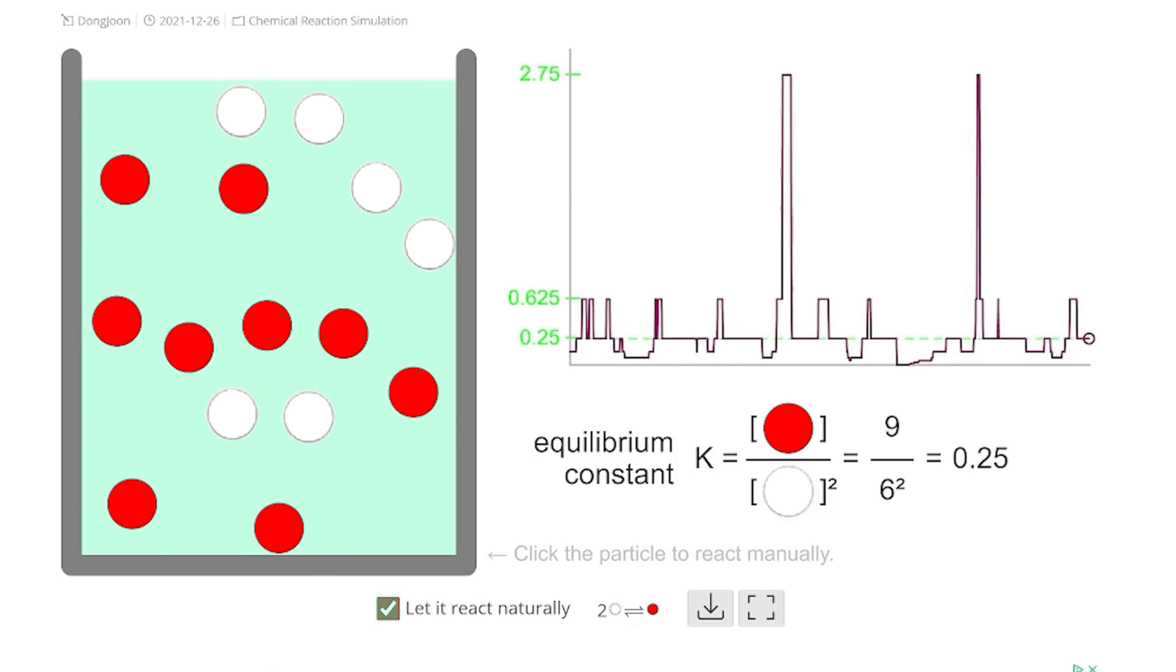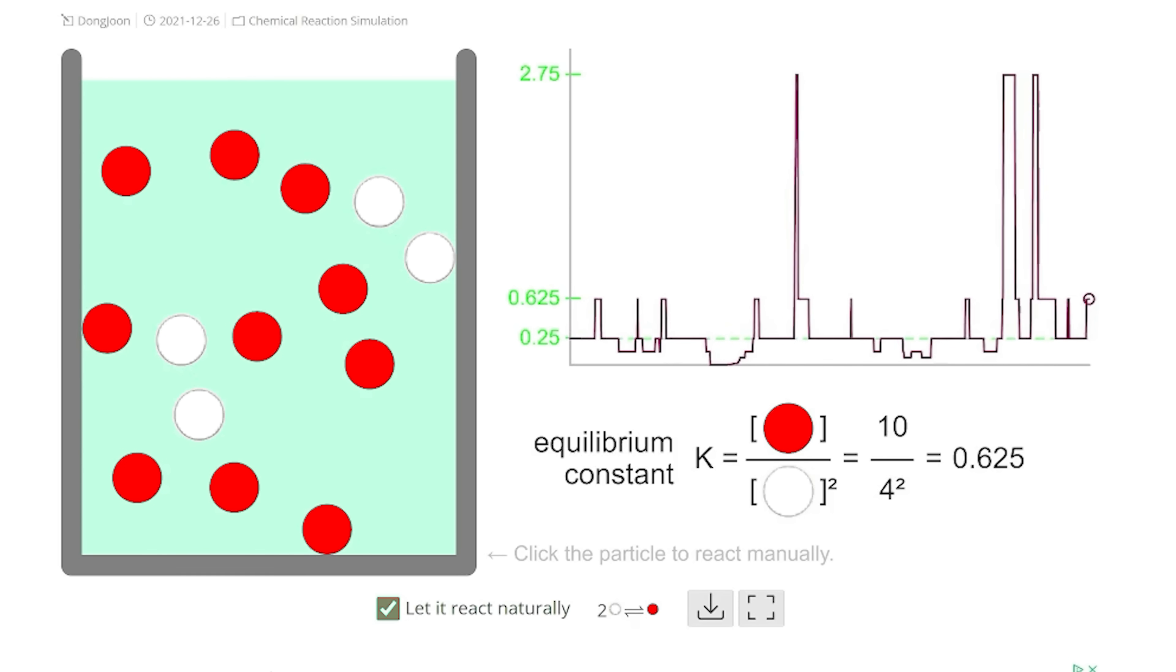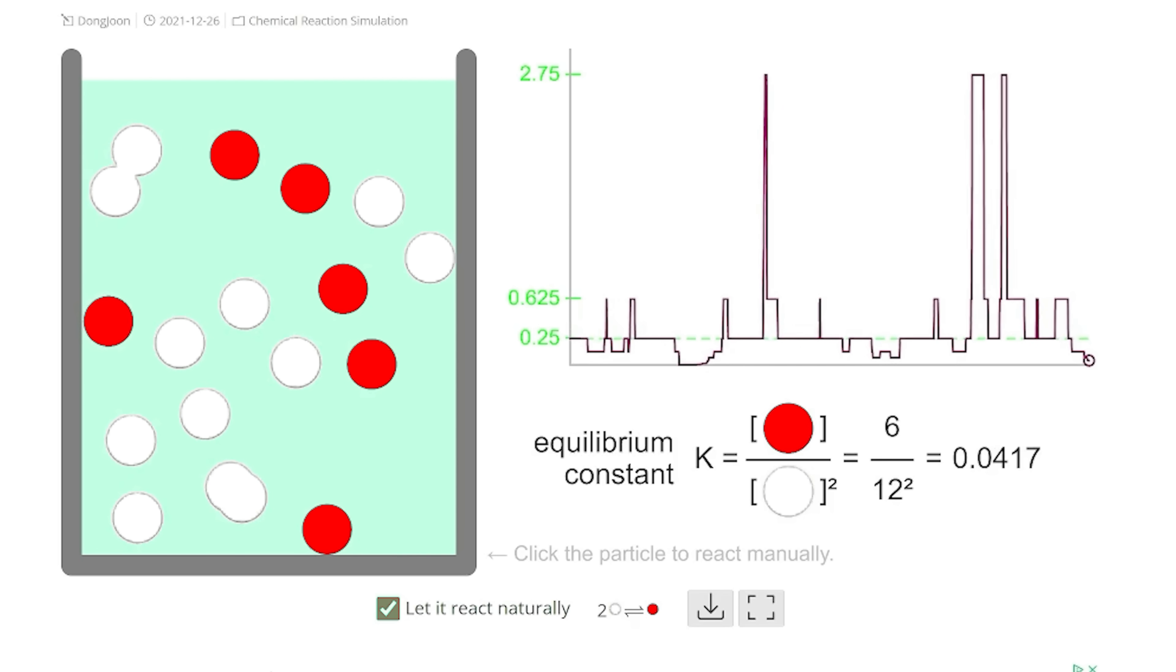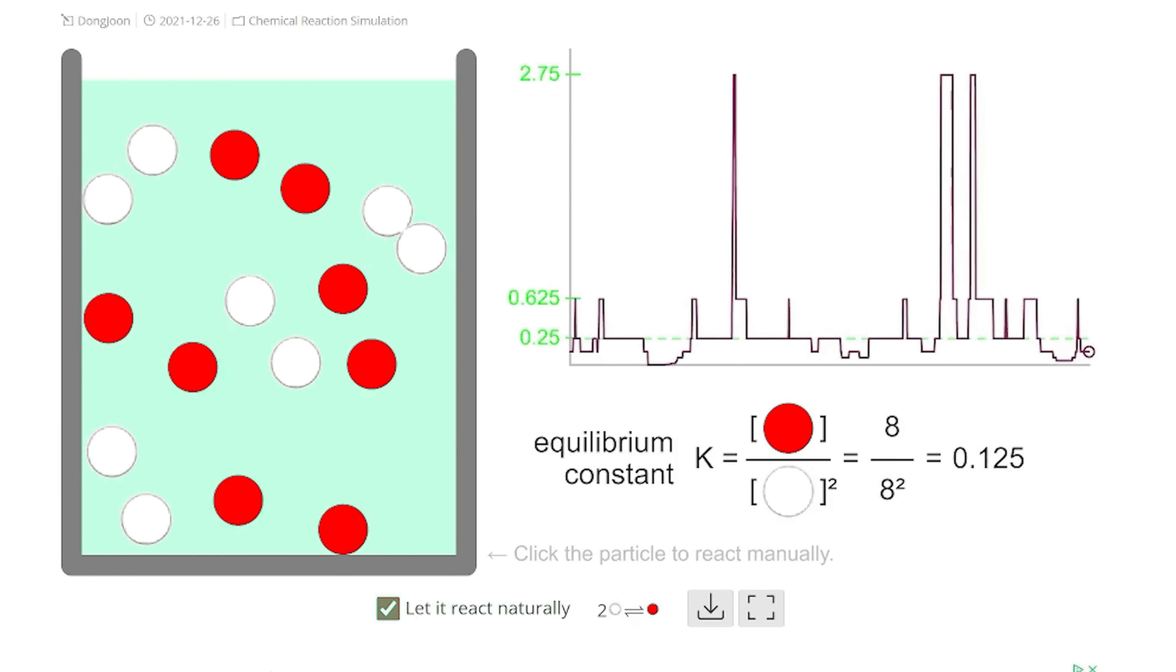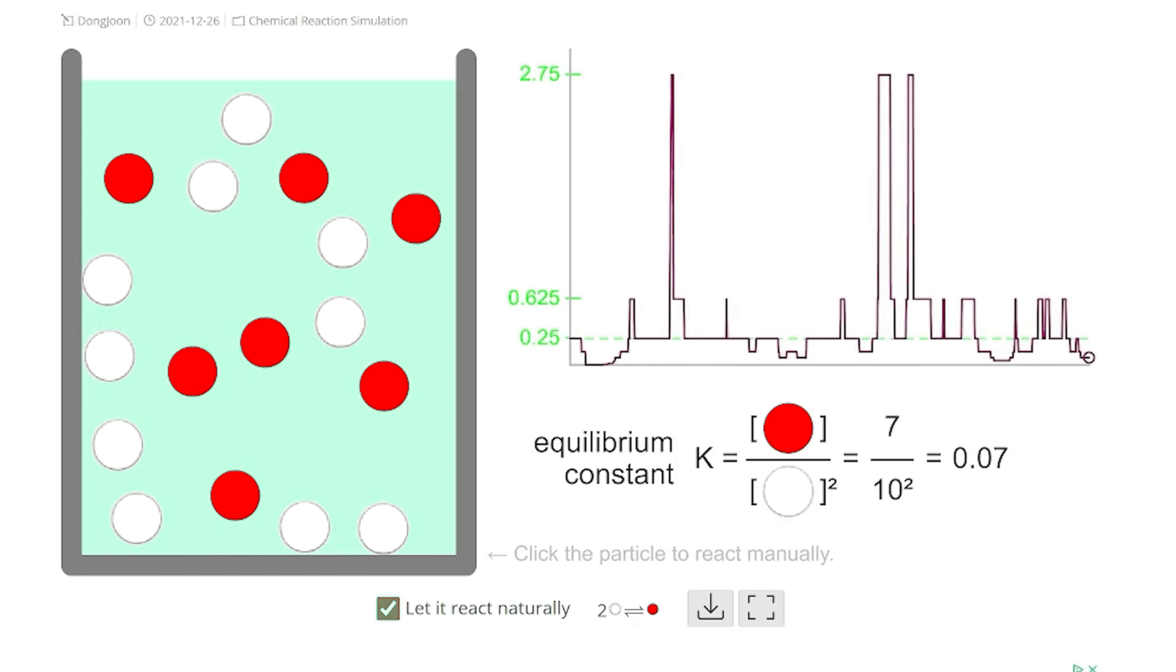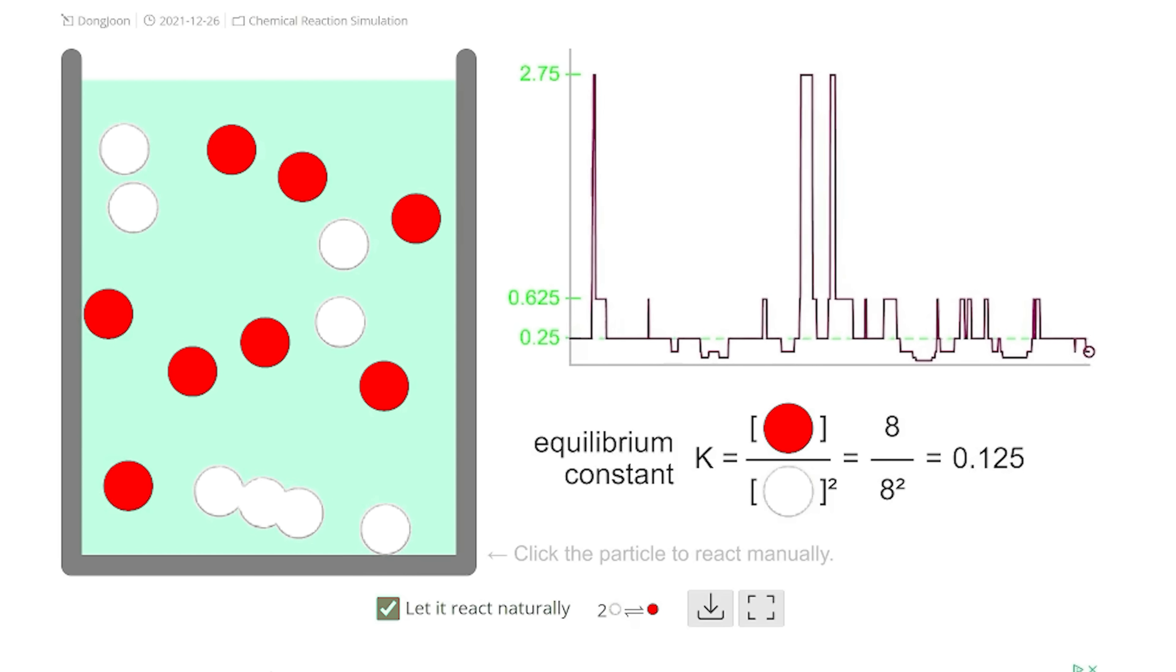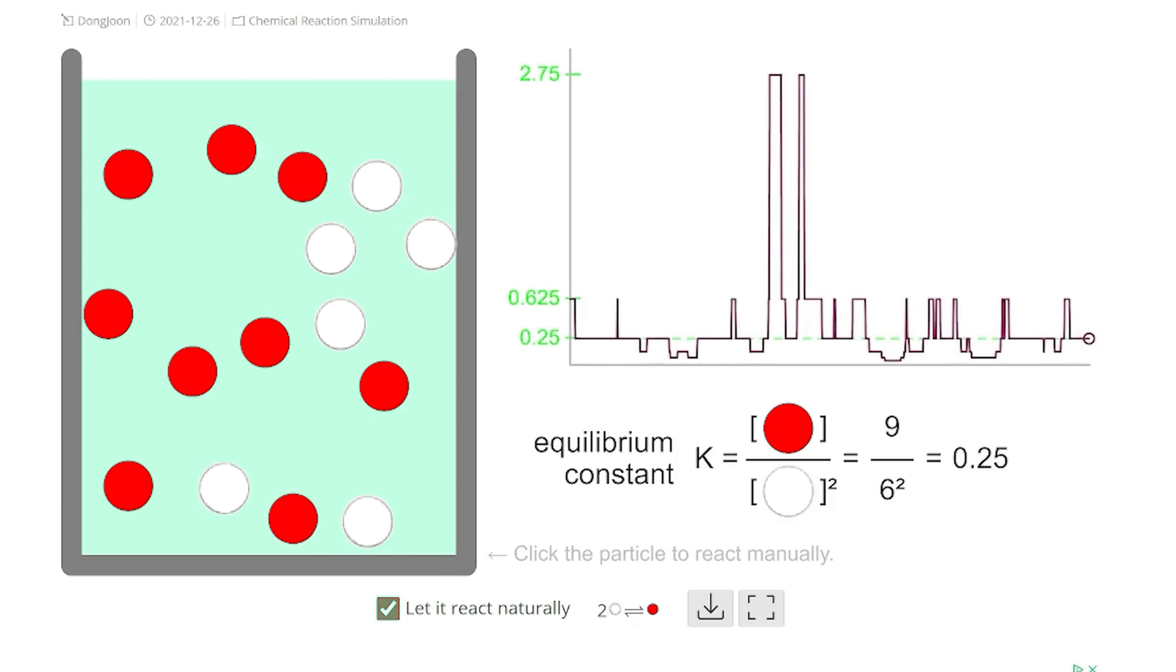Depending on the speed that the white dots react compared to the speed that the red dots split into two white dots, you can get a certain concentration of both red dots and white dots. You can see that on average, the number of red dots and white dots stays the same after a while. This is called equilibrium. So Le Chatelier's principle tells us that it wants to keep this same ratio of concentrations of both the red dots and the white dots.